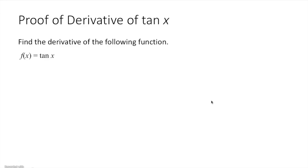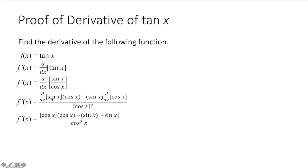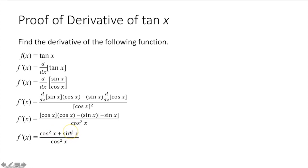Let's prove that the derivative of tangent of x equals secant squared x. Tangent x equals sine x over cosine x, so we apply the quotient rule: derivative of the numerator times denominator minus numerator times derivative of denominator, all over denominator squared. The derivative of sine x is cosine x, and the derivative of cosine x is negative sine x. So we get cosine x times cosine x minus sine x times negative sine x, all over cosine squared x. That gives cosine squared x plus sine squared x over cosine squared x. By the Pythagorean identity, cosine squared x plus sine squared x equals 1, leaving 1 over cosine squared x, which is secant squared x.